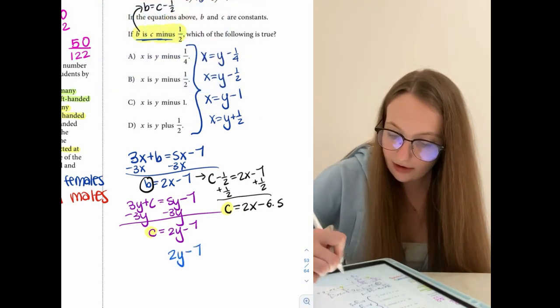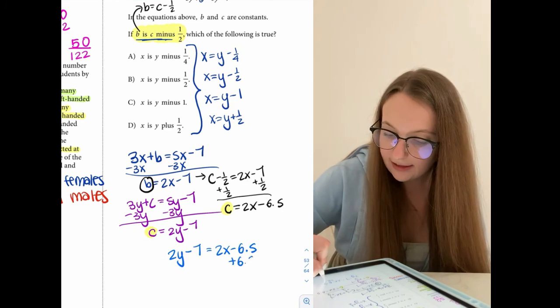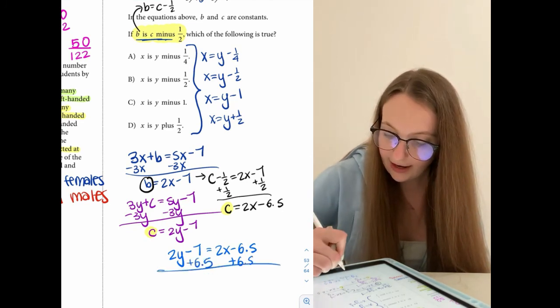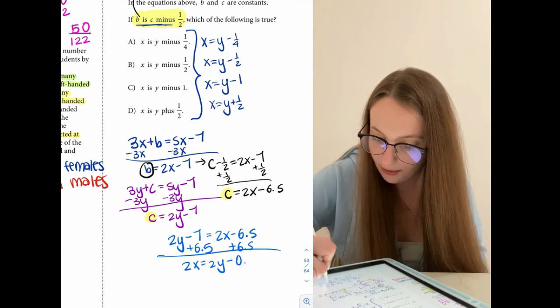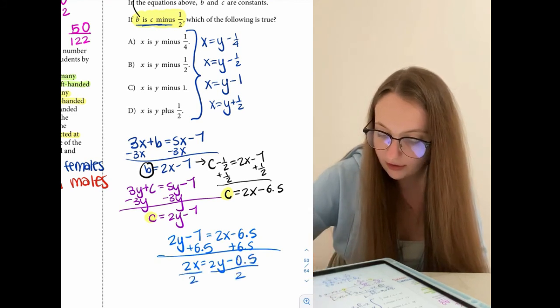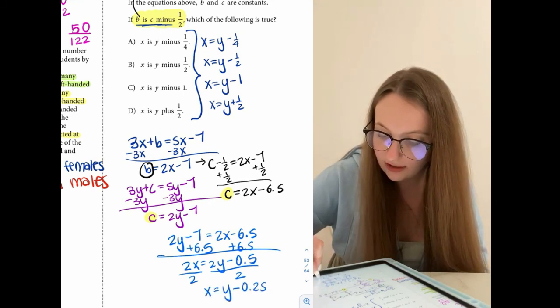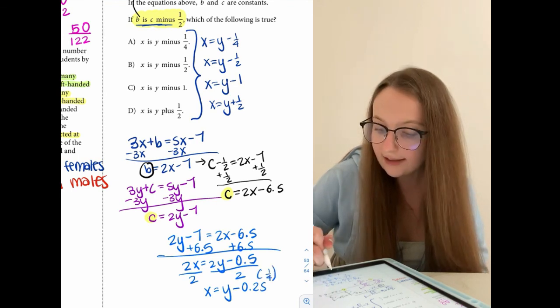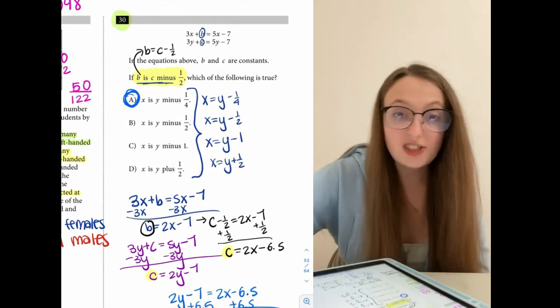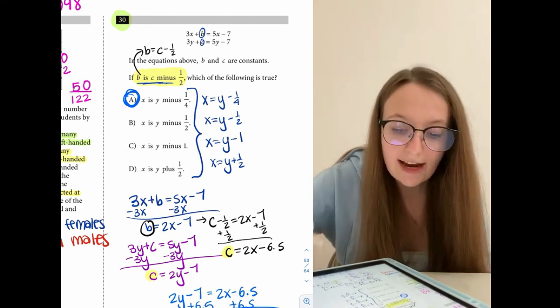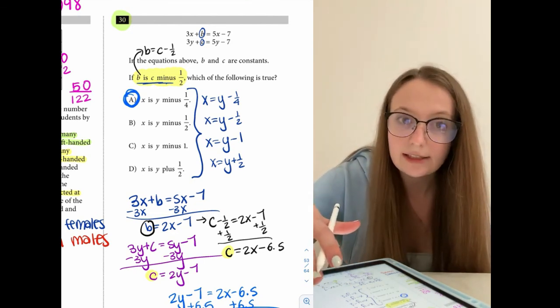So 2Y minus 7 is equal to 2X minus 6.5. I want to get X alone. So I'm going to add 6.5 to both sides. I get then that 2X is equal to 2Y minus 0.5. So to get X alone, we got to divide both sides by 2. We get then that X is equal to Y minus 0.25, which is the same thing as 1 fourth. So X is equal to Y minus 1 fourth. So that has to be then choice A. So was this question annoying? Yeah. But by just actually scanning through the answers and seeing how we need to express our answer before we walk through the problem, it really does make it a lot easier. So there we go.